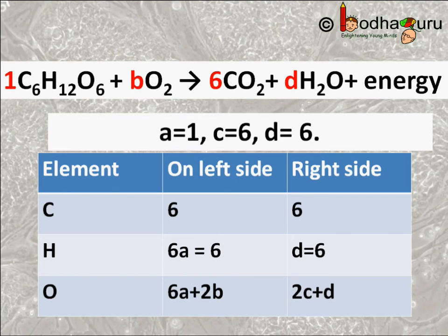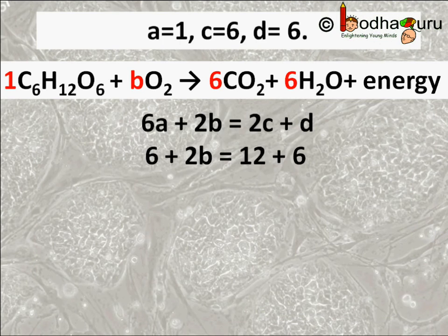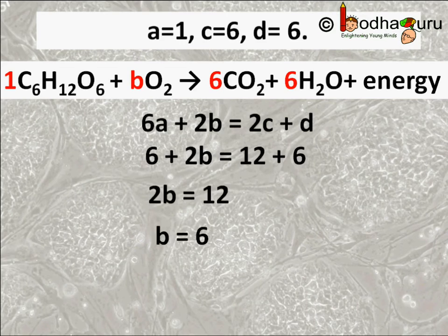Now let's put the values in the equation for oxygen. A is equal to 1, C is equal to 6, and D is equal to 6. Now we can easily get the value of B. So we balance the equation using the algebraic method.